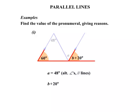So we can say that B plus 20 degrees equals to the 60 degrees. Must give the reason. The reason? Corresponding angles and parallel lines.